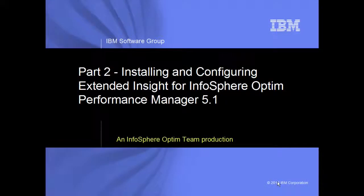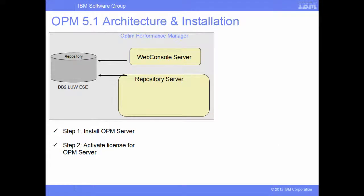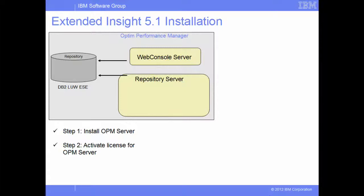This is the second part of the two-part video demo for installing IBM Infosphere Optim Performance Manager and Extended Insight 5.1. In the first demo, we learned about IBM Infosphere Optim Performance Manager architecture, the installation of the product, and the activation on an AIX machine. In this demo, we will learn about Extended Insight architecture, how to activate this feature, and install and configure the client to monitor DB2 CLI, JDBC, and WebSphere applications in command-line mode.